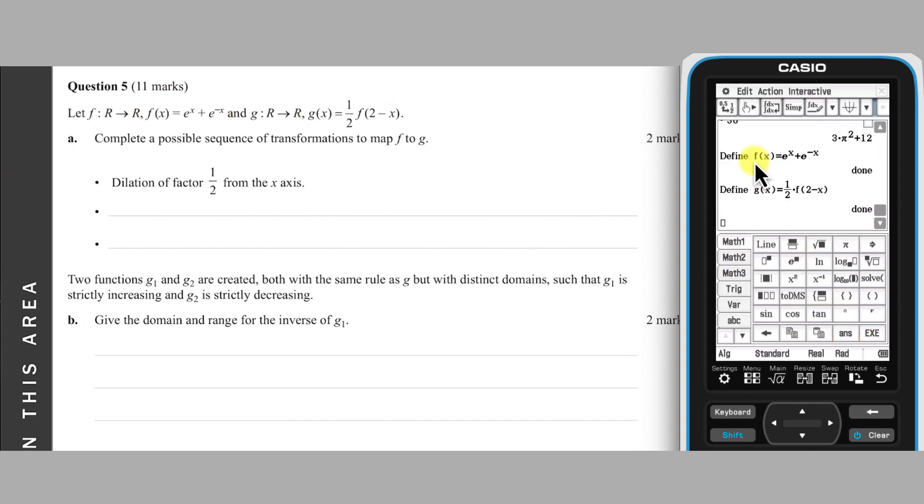G of X is a transformation of F of X. Part A asks us to describe a possible sequence of transformations that map F to G, starting with a dilation of factor a half from the X axis, a transformation that corresponds to the half in the definition of G of X.